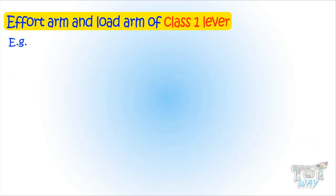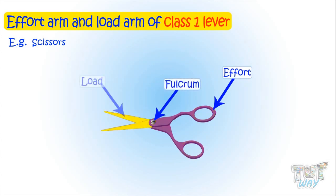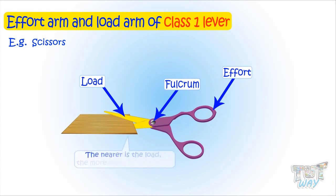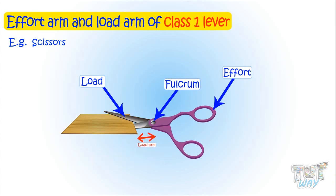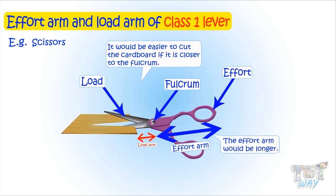Here we have a pair of scissors. Scissors too work on the principle of a lever. This is its effort, this is the fulcrum, and this is the load area — here we place the load. The nearer the load, the more easily it will be cut, as the load arm would be smaller in that case. So if you want to cut a cardboard with scissors, placing it far will be difficult, but if you place it nearer to the fulcrum, the cardboard will be cut more easily, as the effort arm would be longer and load arm would be shorter.